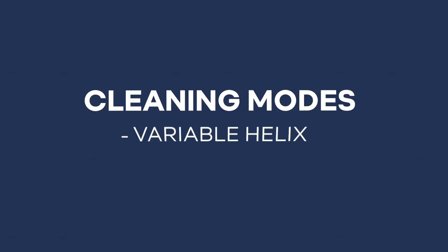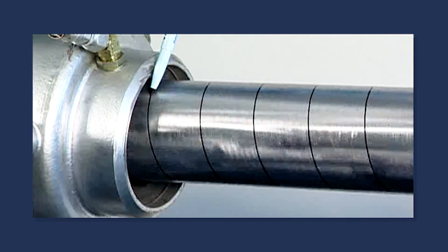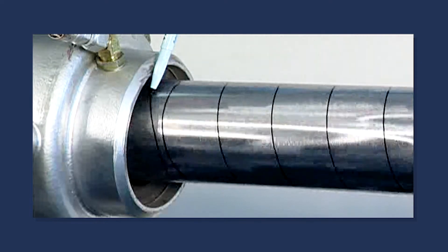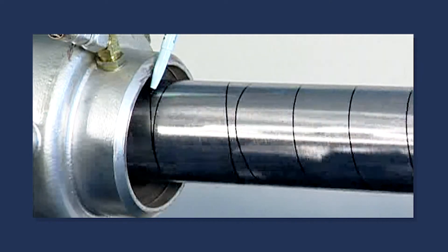Cleaning modes: Variable helix. Unlike standard soot blower operation, the smart soot blower's traversing speed and rotational speed may be set independently to define a helix that provides the appropriate degree of cleaning for the fouling conditions in that zone.